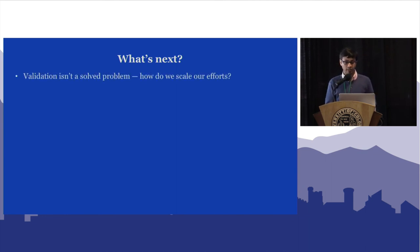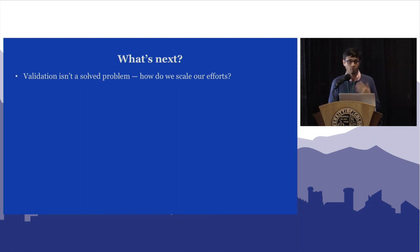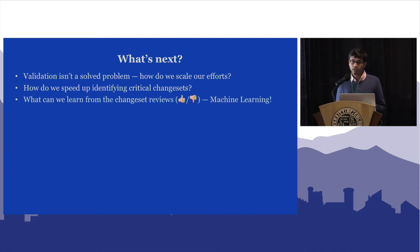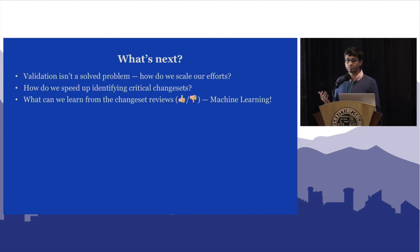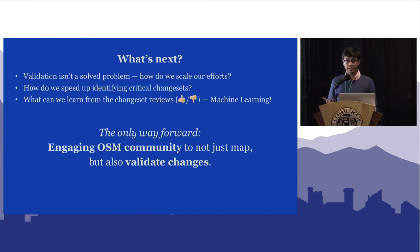But validation is still not a solved problem. With 30,000 changesets added every day, you can't have someone look through all of them — it has to be distributed among more people and communities. How do we find the changes that are really critical and harmful? And what can we learn from these changeset reviews? We'd love to have more folks into machine learning doing analysis on changesets using this data — the whole OSM-Char API is open and you can look through everything that's been manually tagged by verifiers. The only way forward is to engage the OSM community not just to map, but to also validate the changes happening.